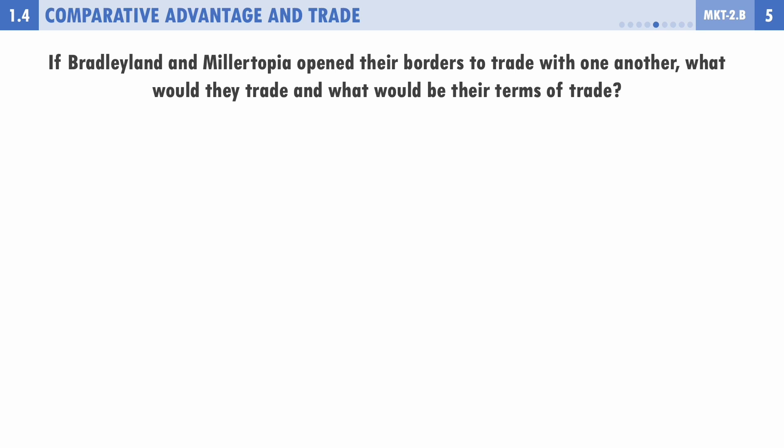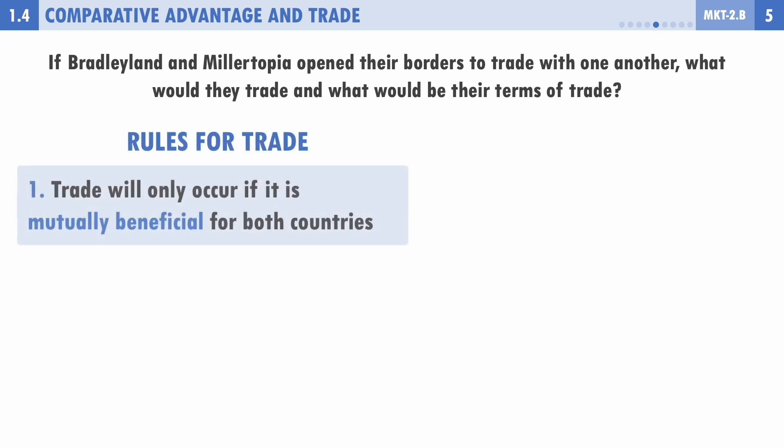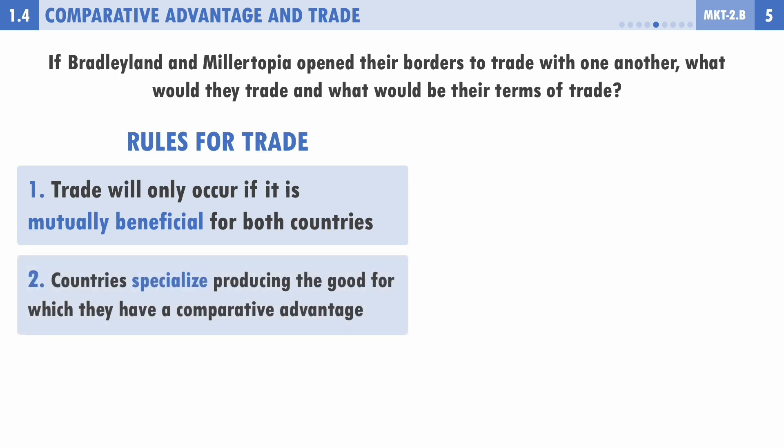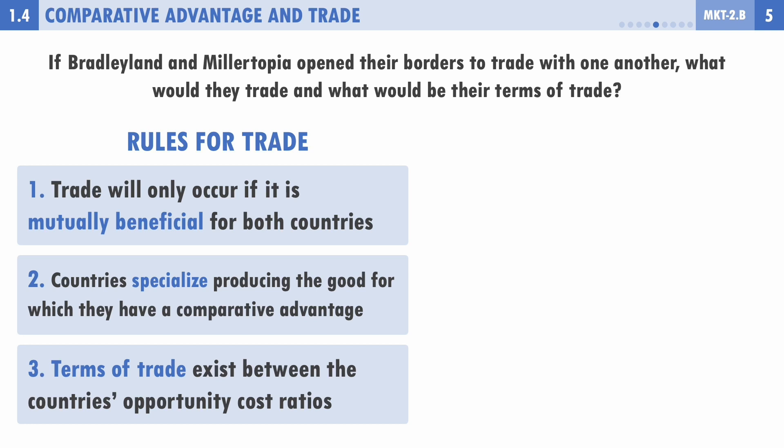What if Millertopia and Bradley Land opened their borders and traded? Why would they trade? Because trade allows countries to achieve access to more goods and services than they could on their own. There are a couple of rules for trade: first, trade only happens if it's mutually beneficial — both countries must benefit. Second, countries should specialize in producing the good for which they have the comparative advantage. Third, the terms of trade will exist between the countries' opportunity cost ratios.